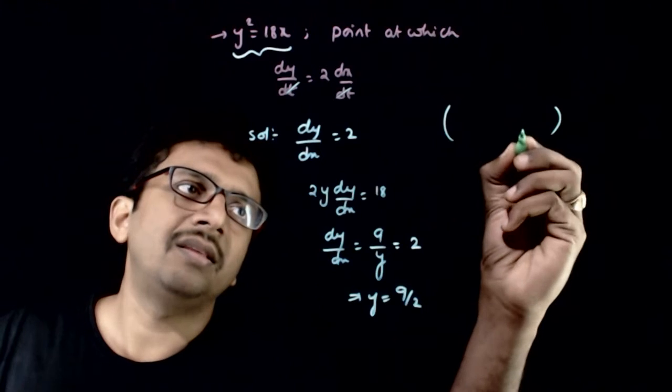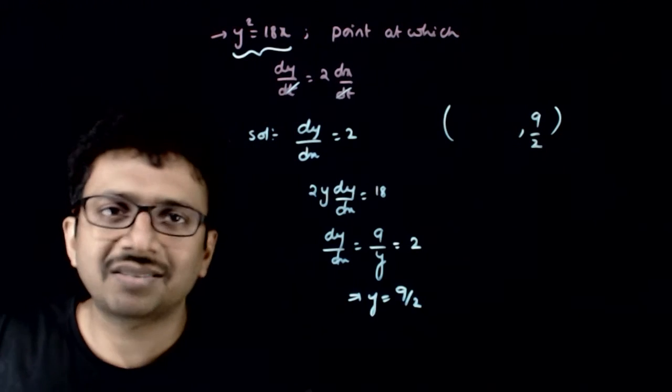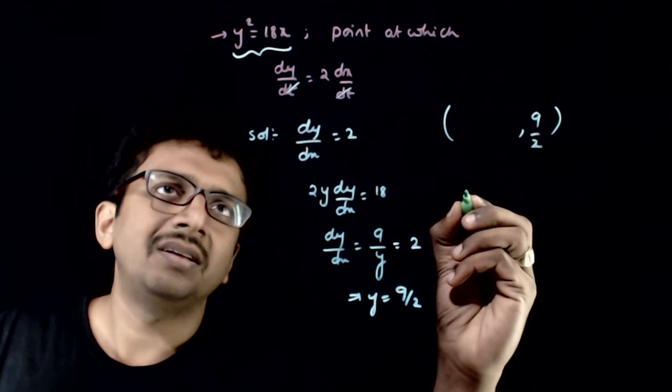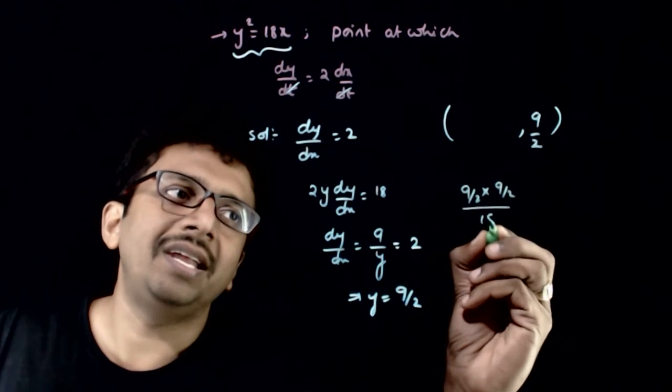So the point will be, the y coordinate will be 9 by 2. So if y is 9 by 2, what is x? x is nothing but 9 by 2 into 9 by 2 by 18.